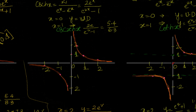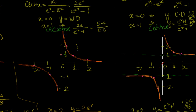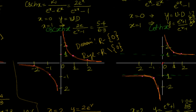For csch(x): the domain is all x values except 0, because x equal to 0 makes it undefined. So domain equals R minus {0}. For the range: looking at the graph, y can take all values except 0. So range also equals R minus {0}.